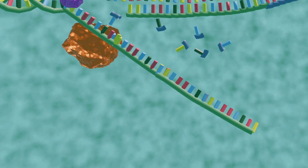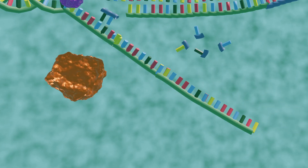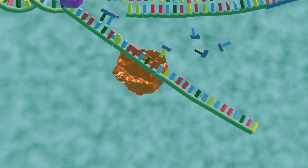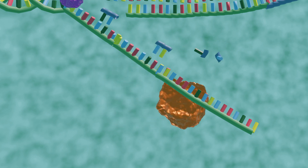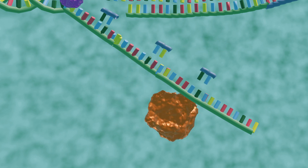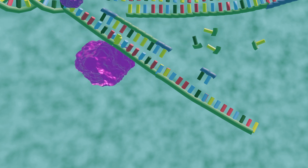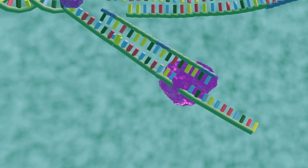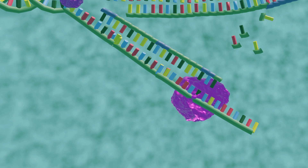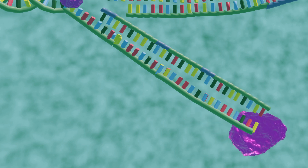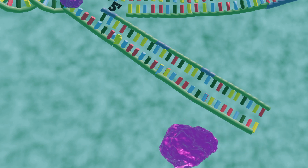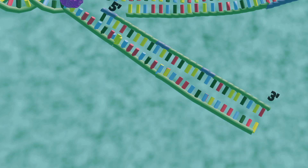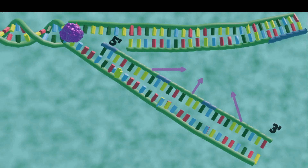Numerous RNA primers are made by the primase enzyme and bind at various points along the lagging strand. DNA polymerase recognizes the primer, adding new complementary nucleotide bases to the strand of DNA in the 5' to 3' direction. These chunks of DNA are called Okazaki fragments.